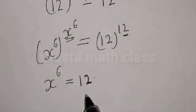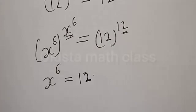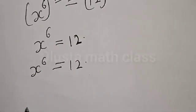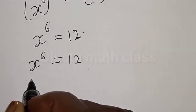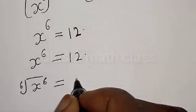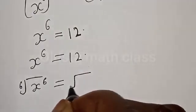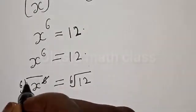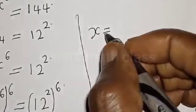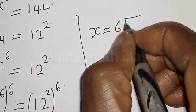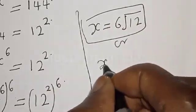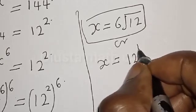Now is that the final answer? No, this is not the final answer — we can still simplify further. We have s raised to power 6 is equal to 12. Let's take the sixth root of both sides: the sixth root of s raised to power 6 is equal to the sixth root of 12. These cancel, so s is equal to the sixth root of 12, or equivalently s is equal to 12 raised to power 1 divided by 6.